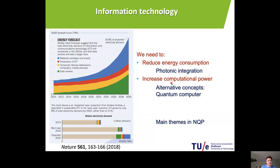One of the challenges is that information technology in general costs a lot of energy. On this graph, you can see the amount of energy per component in information technology over the years. If we extrapolate what we're doing right now, the expectation is that within the coming 10 years we will be using around 20% of the total available energy on information technology — including networks, production of ICT, consumer devices, and data centers. So this is a lot of energy.